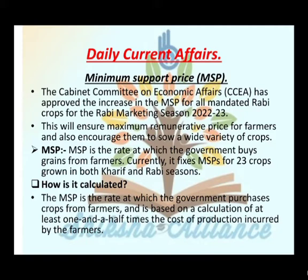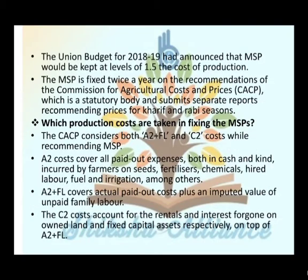The MSP is the rate at which the government purchases crops from farmers, and is based on a calculation of at least one and a half times the cost of production incurred by the farmer. Union Budget 2018-19 mein announce kiya gaya tha ki MSP jo hai wo level par 1.5 times the cost of production hoga.